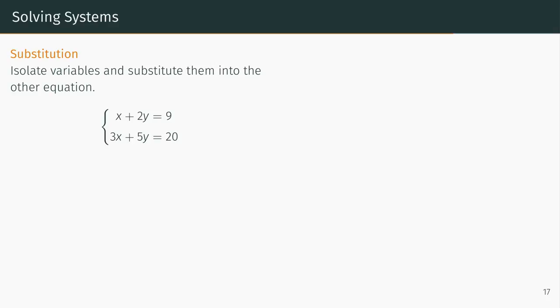Substitution involves isolating one variable and then substituting it into the remaining equations. If we use our example from earlier, we can solve the first equation for x, and then we can substitute that into the second equation.